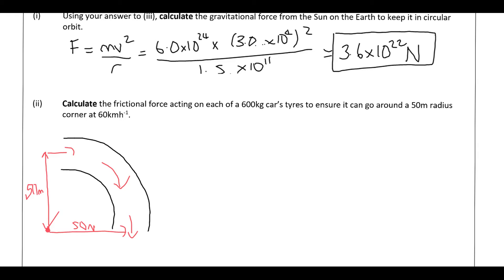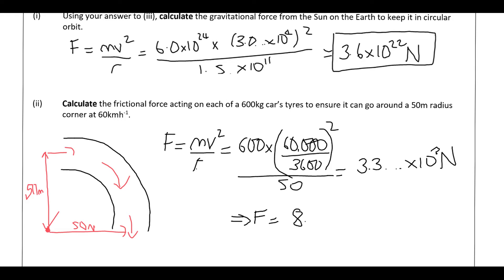So the force required to keep it in circular motion is mv squared over r, which is going to be 600 times by 60,000 over 3,600. That's converting kilometres per hour into metres per second. That's all squared. Then divided by 50 gives us a total force of 3.3 times 10 to the 3 newtons. The car has four tyres, so the force is going to be that answer divided by 4, so 8.3 times 10 to the 2 newtons per tyre. Because it will be shared out between all four of the tyres fairly equally.